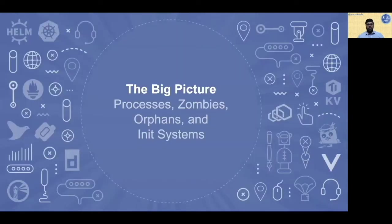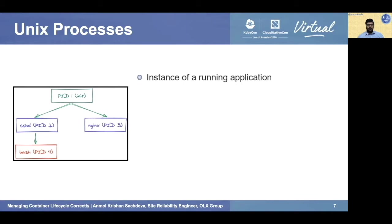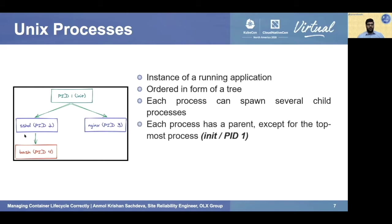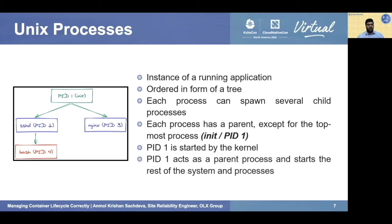In this section we'll be discussing processes and init systems, including zombies and orphans and how to deal with them inside containers. A Unix process is an instance of a running application, and processes are ordered in the form of a tree. Each process can spawn several child processes. The topmost process is called the init process or the PID1 process — started by the kernel at boot and responsible for spinning up the rest of the system processes. PID1 has two children: PID2 running SSHD and PID3 running Nginx. PID2 further creates PID4 running bash.